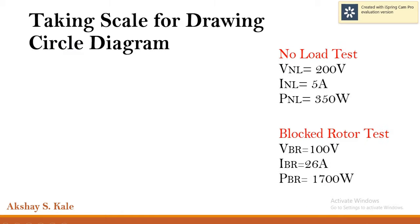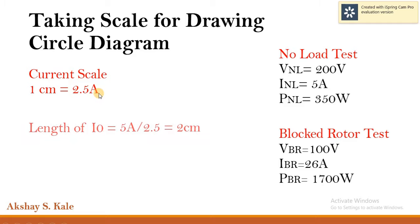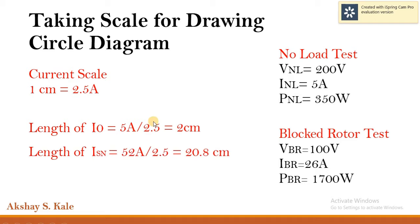Before starting to draw the circle diagram, we must consider the scale. Here we are taking the current scale as 1 cm equals 2.5 amperes. Accordingly, the length of I0 and ISN can be obtained by dividing the values by the current scale. These come out to be 2 cm and 20.8 cm respectively.